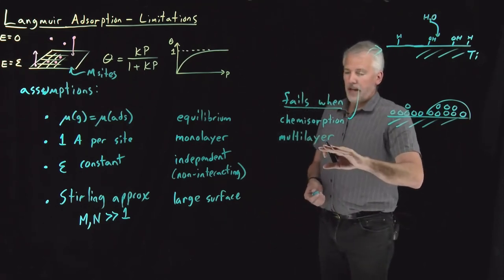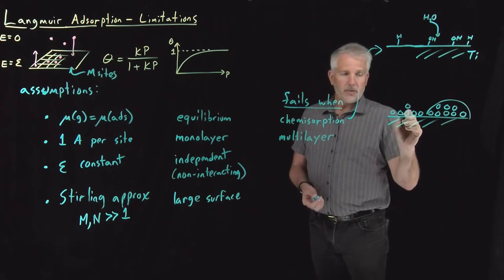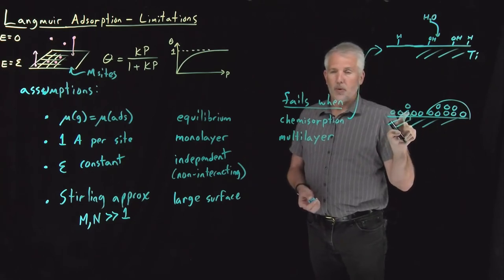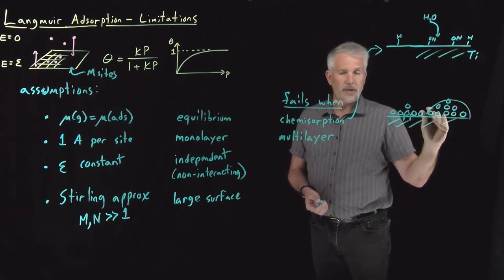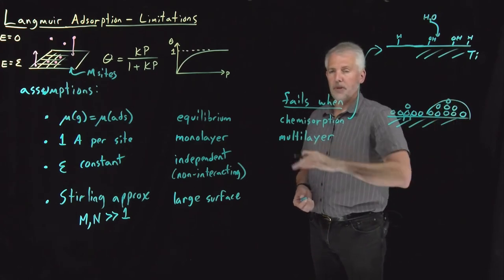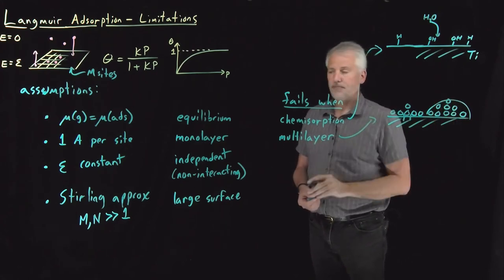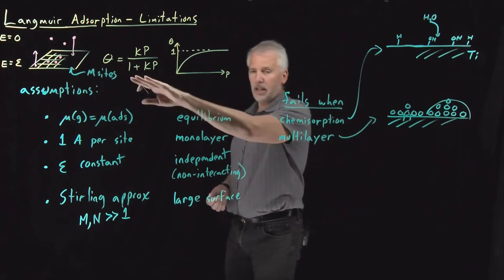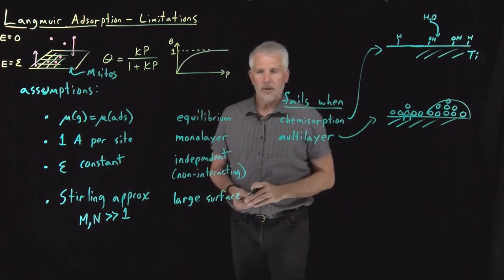And that will completely violate the assumption that each one of these lattice sites can only hold one molecule. It can hold two or perhaps three or very many molecules in these multilayer adsorption cases. So if you have multilayer adsorption, again the Langmuir isotherm model won't be correct.